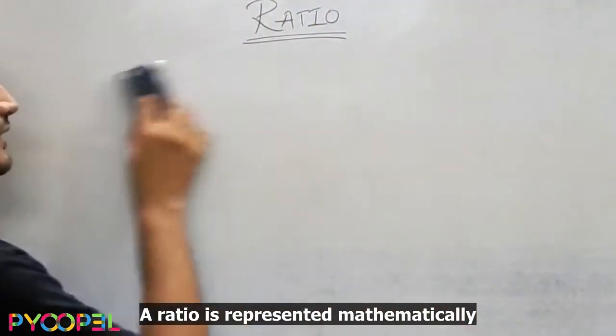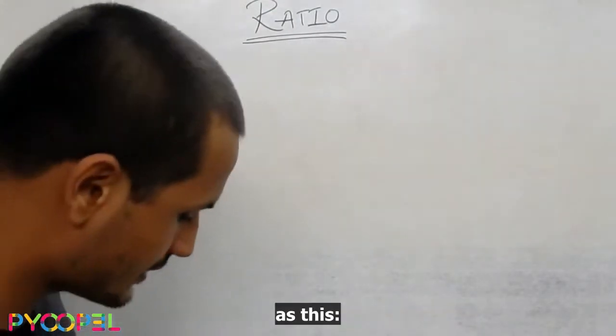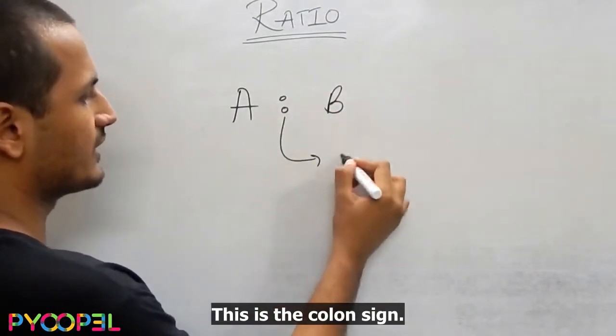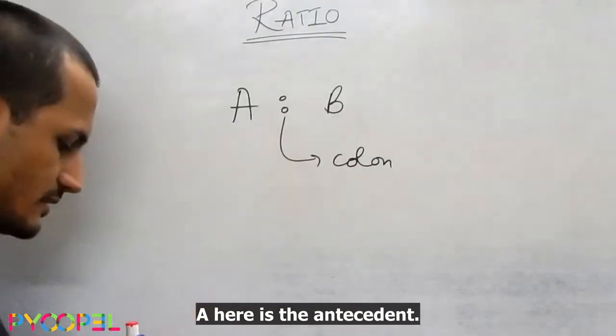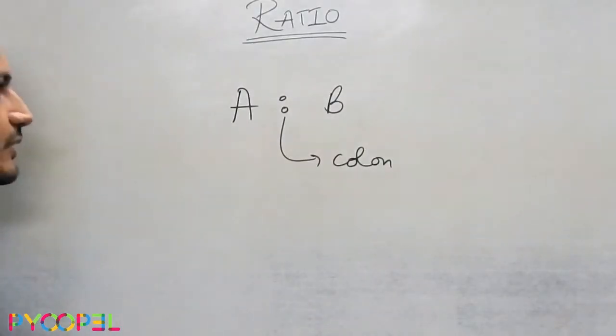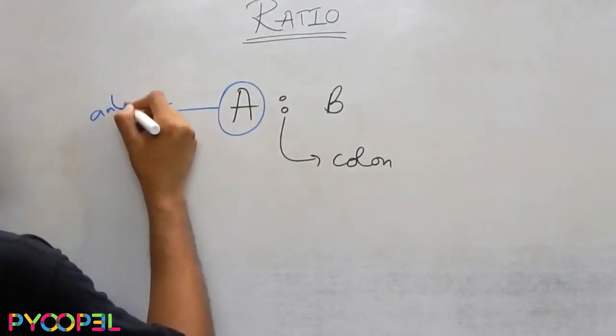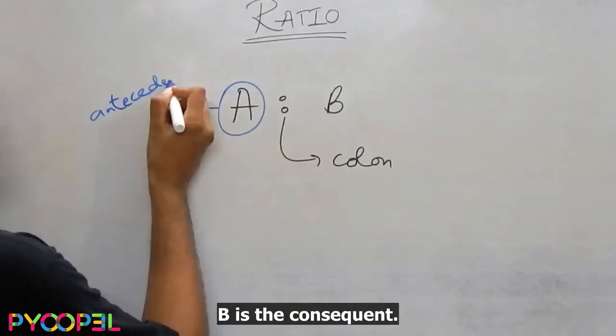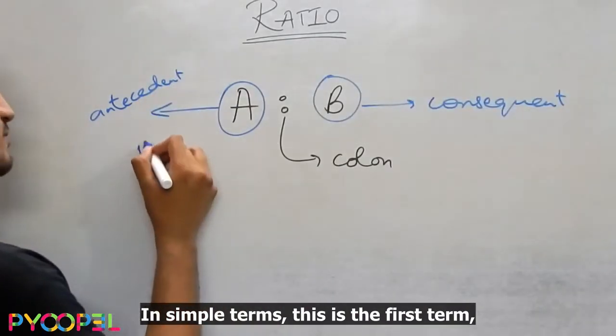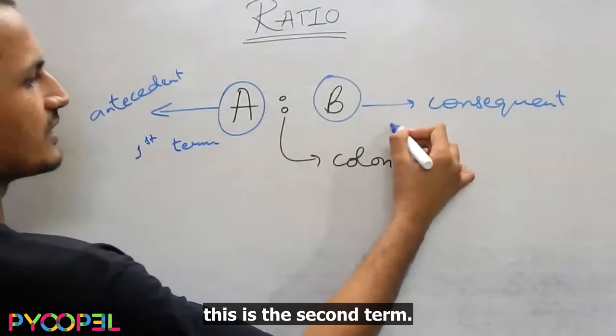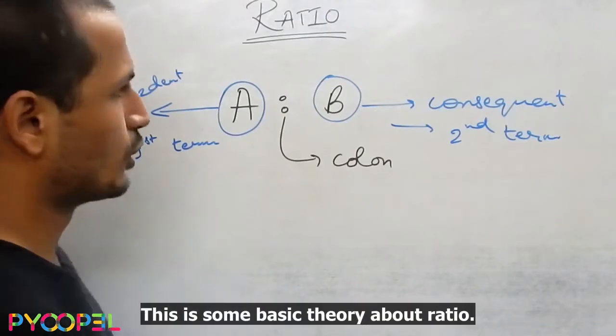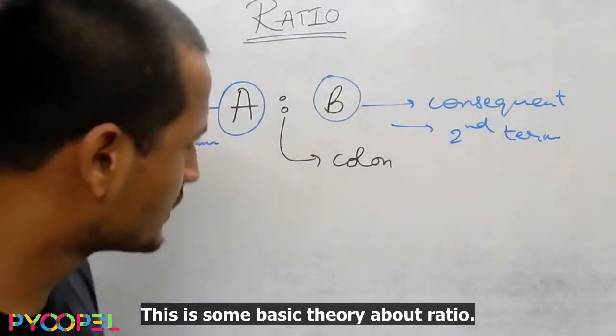A ratio is represented mathematically as this. This is the colon sign. A here is the antecedent, B is the consequent. In simple terms, this is the first term, this is the second term.